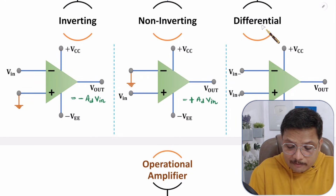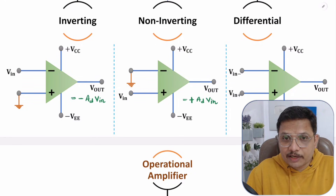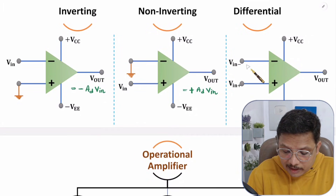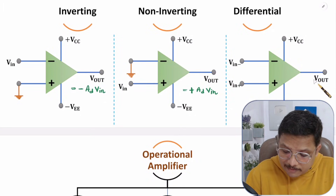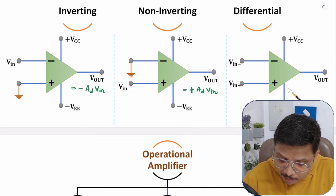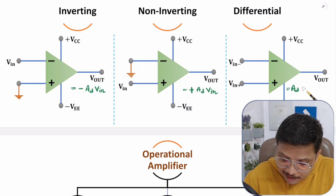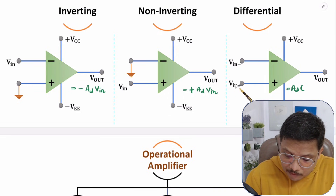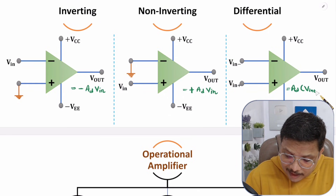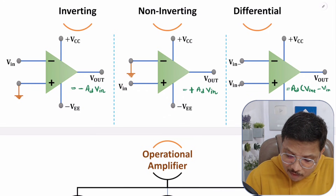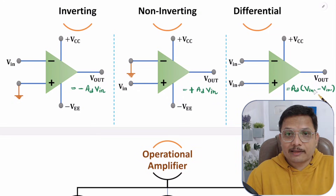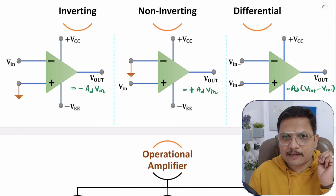In differential configuration, input is given to both inverting and non-inverting terminals. The output is differential gain AD times (VIN+ minus VIN−), so the output is the differential of the inputs. That is how the three different configurations work.